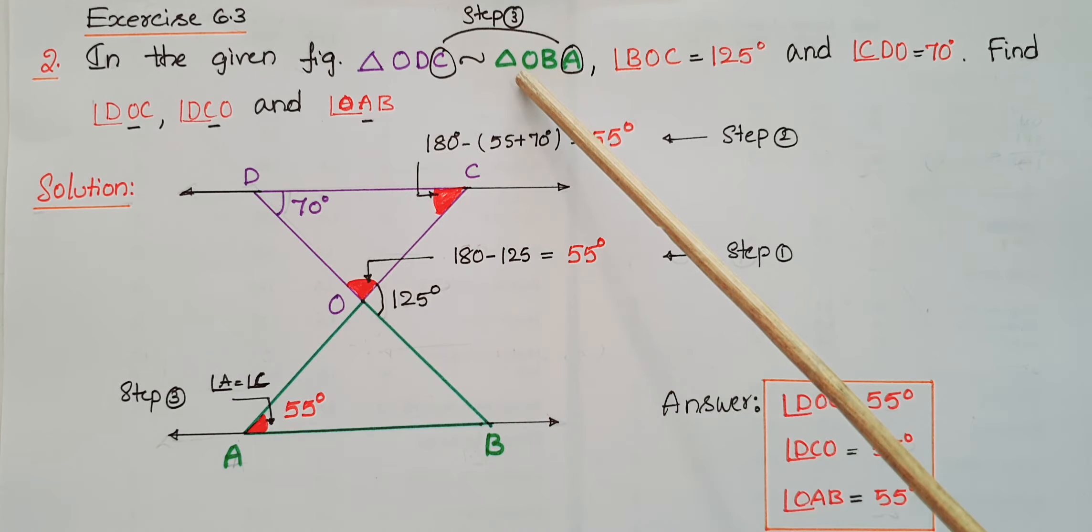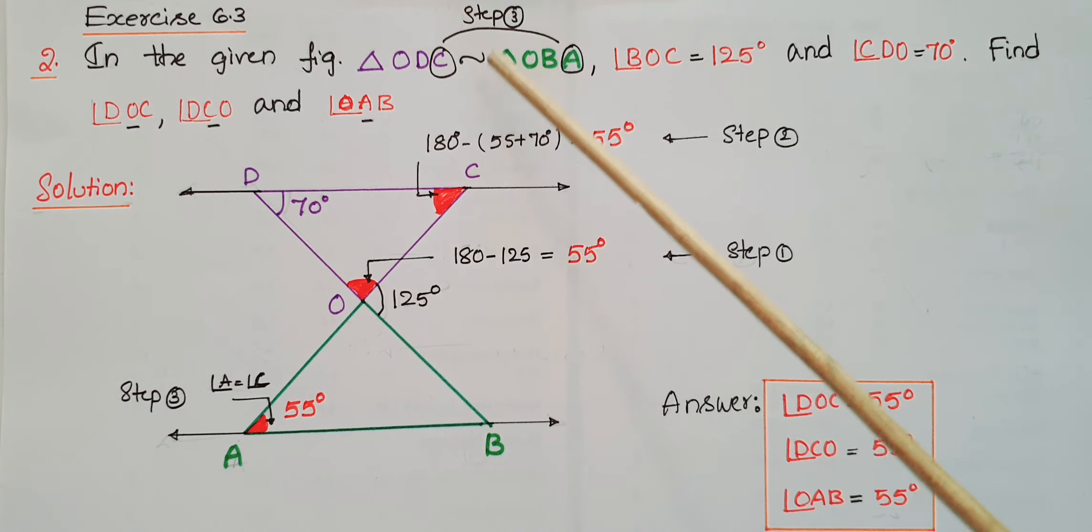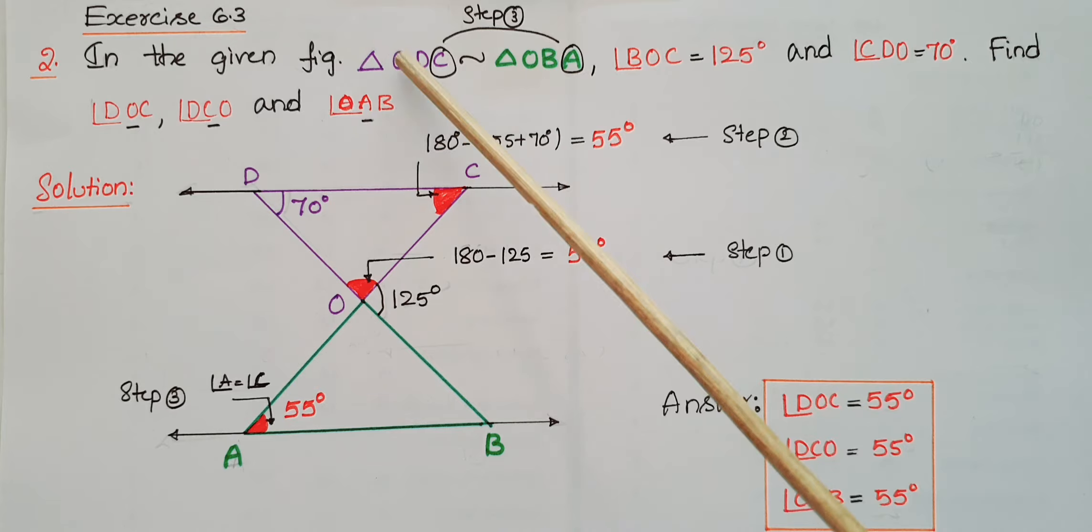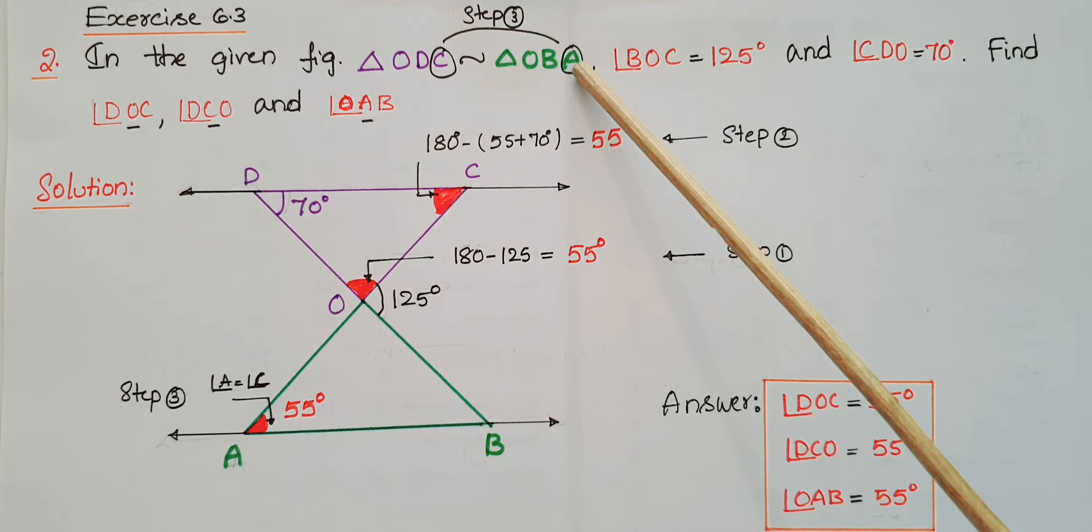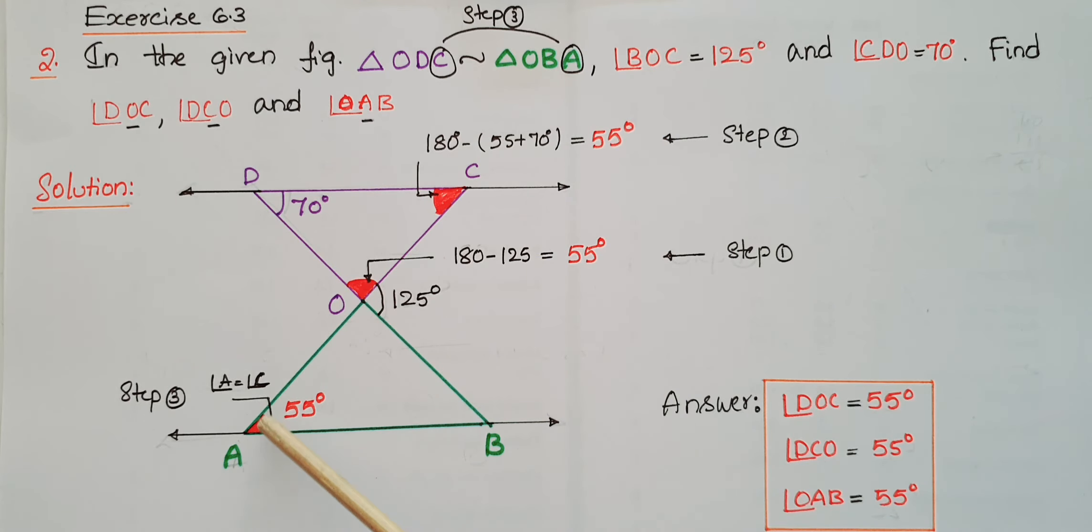These two triangles are similar, as given in the problem. In similar triangles, the corresponding angles are equal. Here the corresponding angles are O and O, D and B, and C and A. So you can equal angle C and angle A.